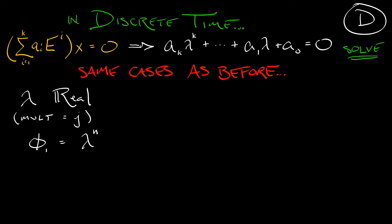The remaining basis solutions, phi 2 all the way up through phi j, are going to be lambda to the n times increasing powers of n. So phi 2 is n lambda to the n. Phi 3 is n squared lambda to the n, all the way up through phi j, which is going to be n to the j minus 1 times lambda to the n. That is a simple pattern that follows what we did both in discrete time 2d and in continuous time arbitrary d just now.